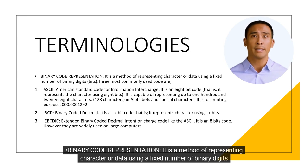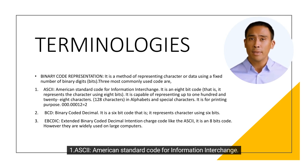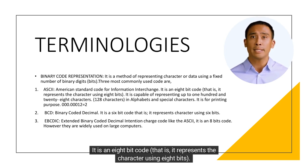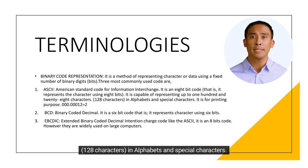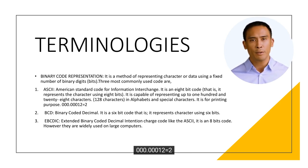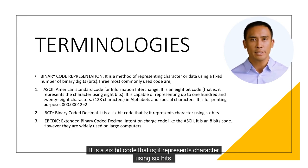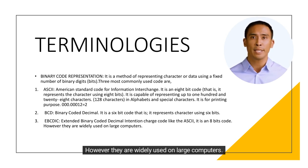Binary code representation: it is a method of representing characters or data using a fixed number of binary digits (bits). The three most commonly used codes are: 1. ASCII — American Standard Code for Information Interchange — an 8-bit code capable of representing up to 128 characters including alphabets and special characters, used for printing purposes. 2. BCD — Binary Coded Decimal — a 6-bit code representing characters using 6 bits. 3. EBCDIC — Extended Binary Coded Decimal Interchange Code — an 8-bit code, widely used on large computers.